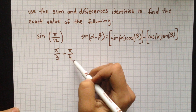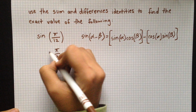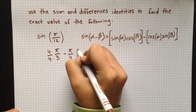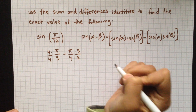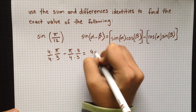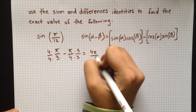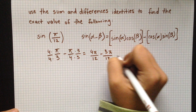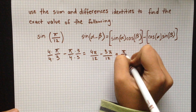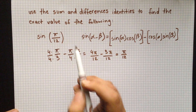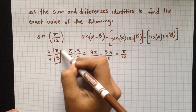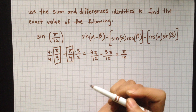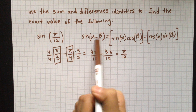When you subtract these two, to get a common denominator you multiply pi over 3 by 4 over 4, and pi over 4 by 3 over 3, so you get 4pi over 12 minus 3pi over 12, which equals pi over 12. So these two angles are what alpha and beta are going to be.